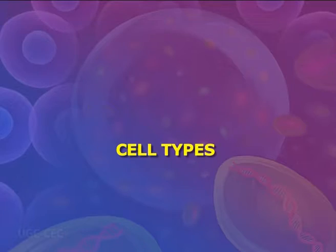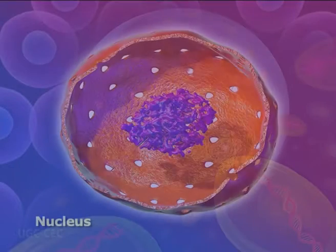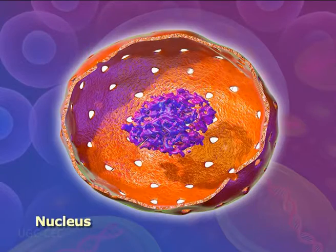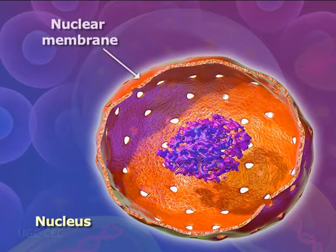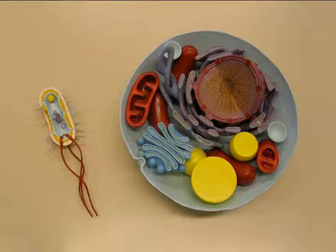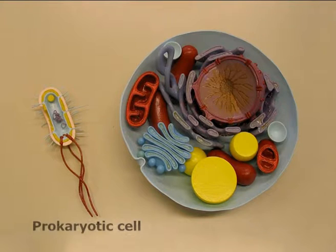Another basic cell structure present in many but not all living cells is the nucleus. The nucleus is a structure in the cytoplasm surrounded by a membrane called the nuclear membrane and contains DNA or RNA. Based on whether they have a nucleus, there are two basic types of cells: prokaryotic cells and eukaryotic cells.